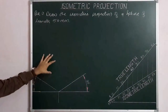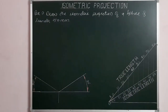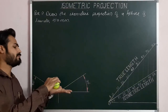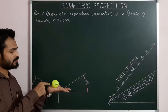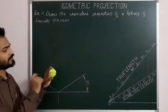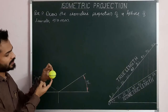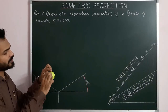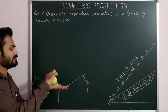The question is from where to start. Here the sphere is resting on HP. In the domain of this sphere, two points are important. First, the center of the sphere. Second, the point of contact of the sphere and HP.